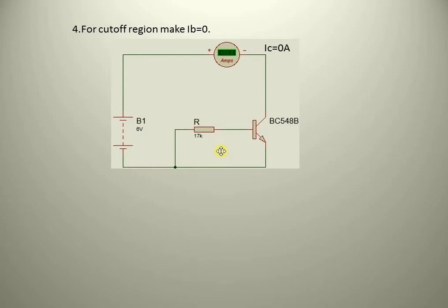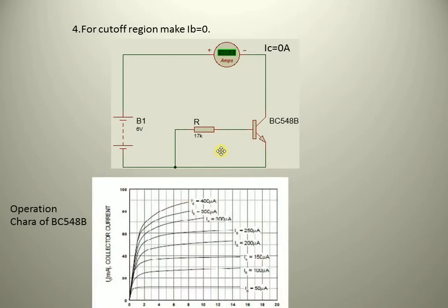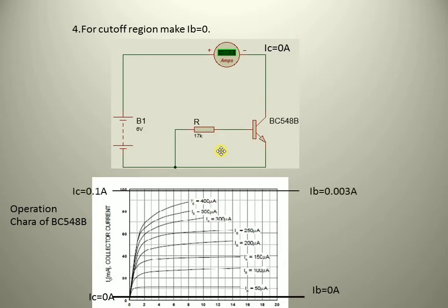When we connect the base terminal to zero voltage, then the collector current will be 0, and the transistor is in the cutoff region. The operation characteristics of BC548B from the datasheet are shown here. You can see that if base current is made 0, then the collector current will be 0 — this portion is the cutoff region. And when the base current is made 0.0003A, the collector current will be 0.1A or 100mA, which is the maximum collector current.